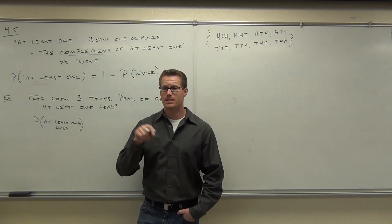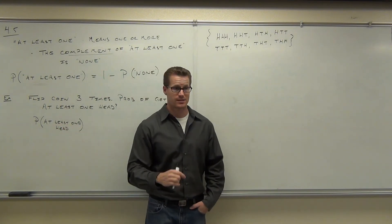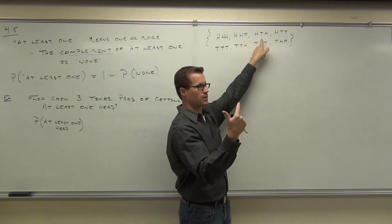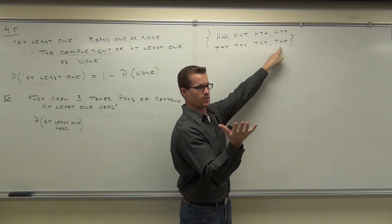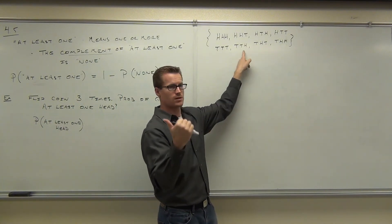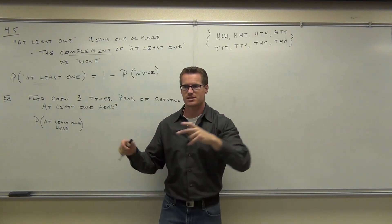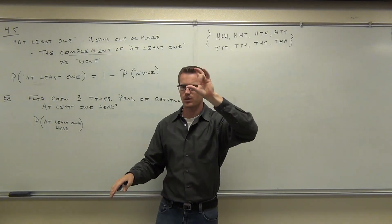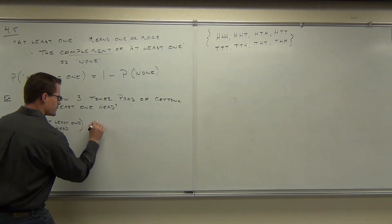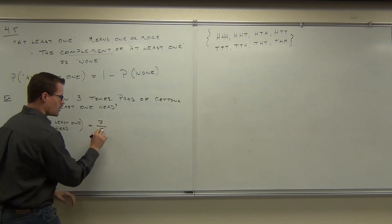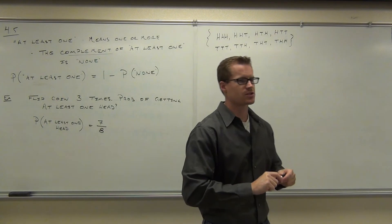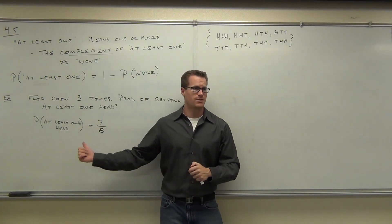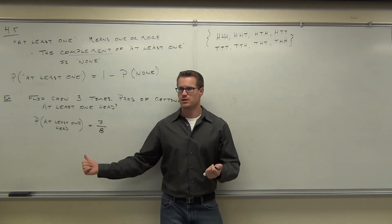Now, can you tell me how many of these satisfy 'at least one head'? Going through each: one, two, three, four, five, six, seven — and then one that does not (all tails). So seven ways satisfy 'at least one head.' Seven of those have at least one H. So we have seven out of the total eight possible. The probability of getting at least one head is seven-eighths. If someone said 'flip a coin three times, I bet you can't get at least one head,' you'd have a seven-eighths chance — that's a good bet for you.